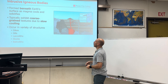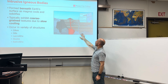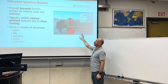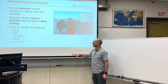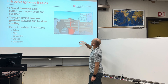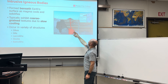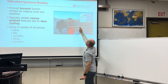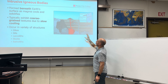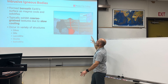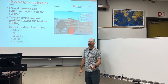Intrusive igneous rock bodies form below the surface. They occur in a variety of structures: plutons, dikes, sills, lacoliths, stalks. Put them all together and you get a batholith.